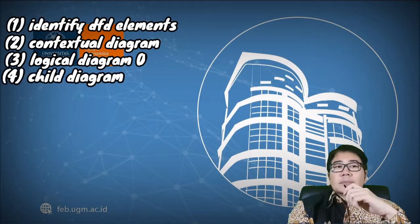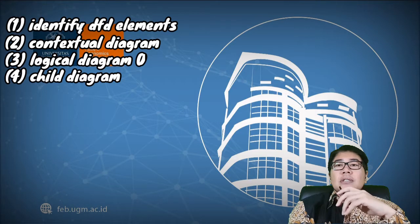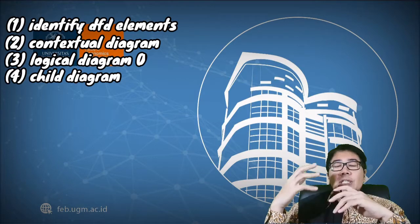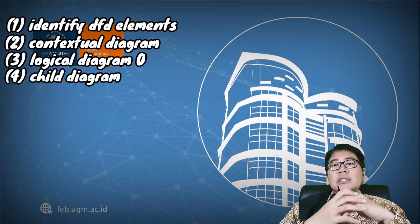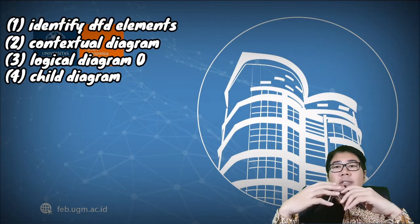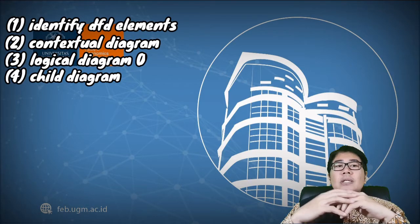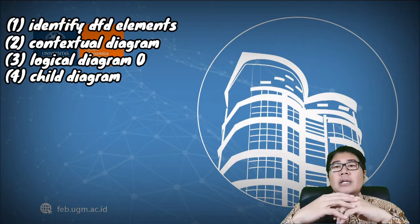The fourth step is to make a child diagram, which is a more detailed diagram for each process on the level zero diagram. By breaking down the processes on the level zero logical diagram, we usually call this the level one logical diagram.